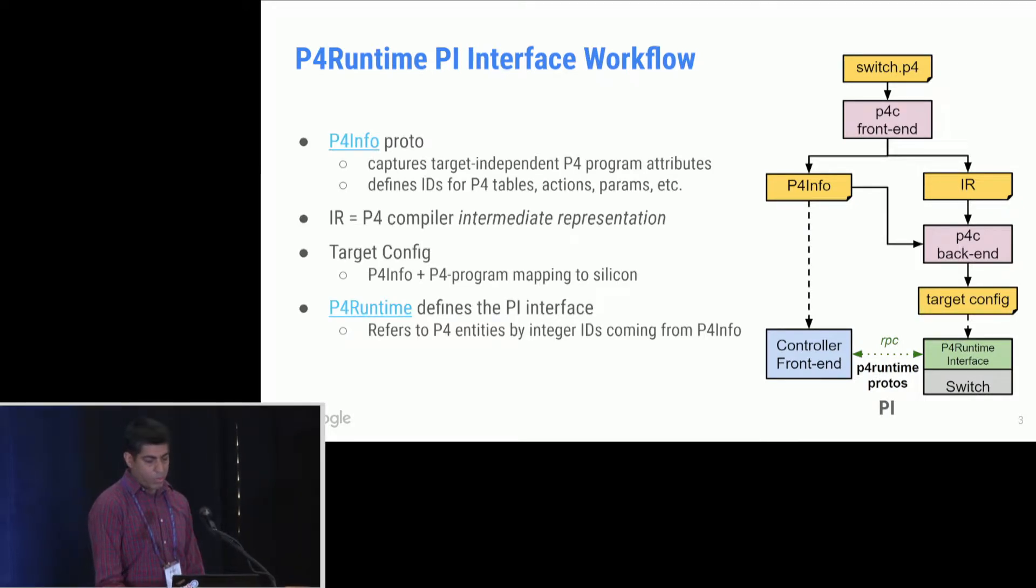In this slide, we show the workflow associated with the P4 runtime API. So you begin with a switch spec expressed as switch.p4. We run that through the P4C compiler. This generates what we're calling here P4 info, which is a piece of data that captures target independent P4 program attributes, such as tables, match fields, actions, parameters, and also assigns unique integer IDs to them. This P4 info is then made available to the controller front end. It is also pushed to the switch as part of the P4 target config. And as a result, the proto messages that flow over the P4 runtime interface are program independent because they only refer to P4 entities by these integer IDs.